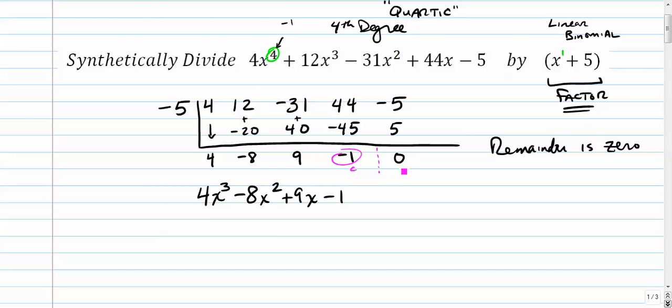And then this is your remainder. In this case, our remainder was 0, so we don't have to write anything else. So this is what you get when you divide that really crazy long quartic by x plus 5.